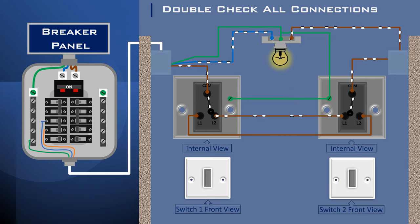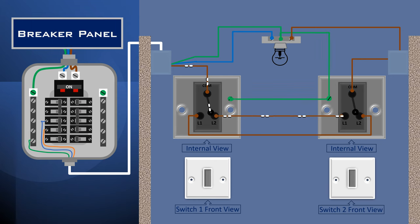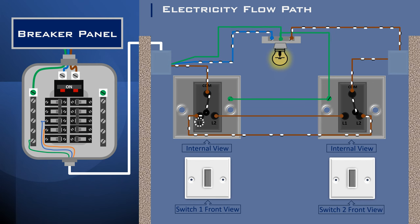If we now change the second switch position, the connection is broken and the light goes off. Electricity flow path changes. If the first switch position is changed again, redirecting flow path from the common terminal to L1 of the first switch through L2 of the second switch to the light fixture live terminal and back to the neutral wire. Each time we flip switch 1 or switch 2, depending on the direction of flow of electricity, the light either goes off or on.